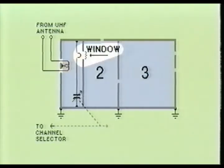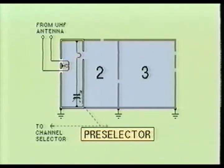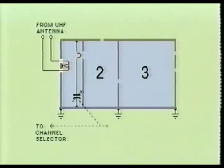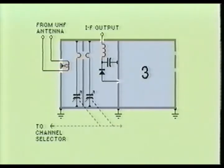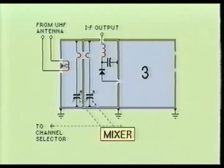The tuned line coupling device is adjacent to an opening between compartments one and two. This window is used to allow electromagnetic coupling between the two compartments. The first compartment is the preselector portion of the UHF tuner stage. The second compartment contains the mixer tuned line, which acts as a coupling device and is placed physically close to the window between compartments one and two. This compartment also contains a diode which acts as the mixing device, a capacitor connected between the anode of the mixing diode and the compartment wall, and a coil placed between the anode of the mixer diode and the UHF intermediate frequency output. The second compartment represents the mixer stage of the UHF tuner.